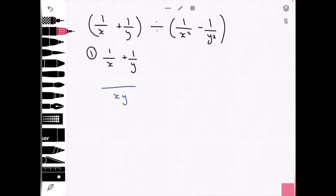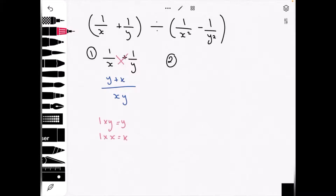We multiply the denominators: x times y. To find the numerator, we cross multiply. So 1 times y equals y, and 1 times x equals x, giving a numerator of y plus x. For the second fraction, 1 over x squared minus 1 over y squared, we multiply the denominators to get x squared times y squared.